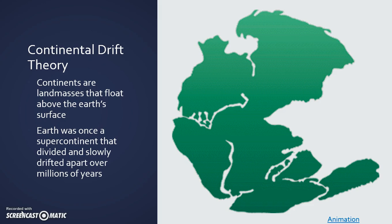We need to talk about the continental drift theory. If you've taken a science class before, you might have heard this. Continental drift theory is the theory that the continents are big landmasses that are floating above the earth's surface, and that at one point earth used to be made into a supercontinent and it eventually broke apart and started drifting away from each other millions of years ago.